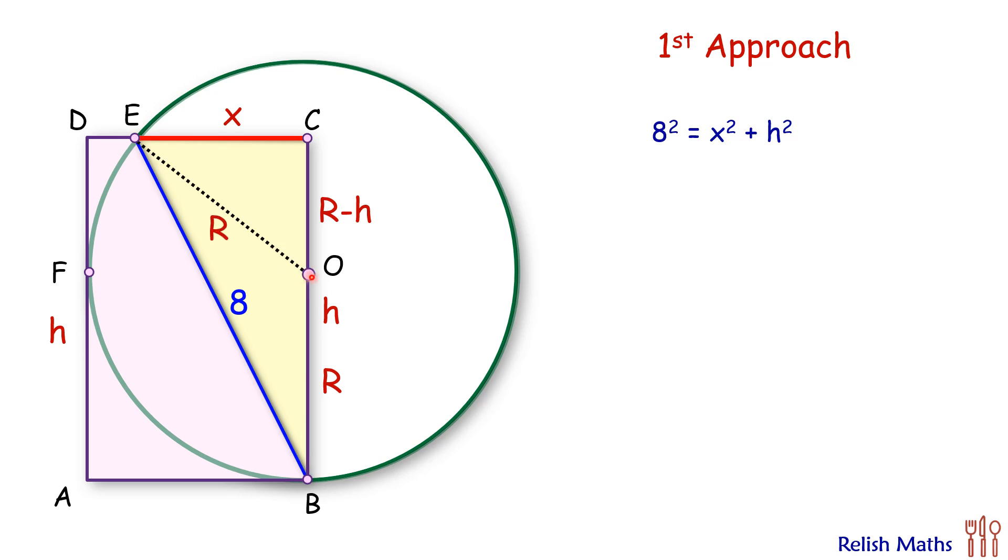So this is R cm. In triangle ECO, applying Pythagoras theorem again, we get R² = x² + (h - R)². Now simplifying this, we get R² = x² + h² + R² - 2hR.